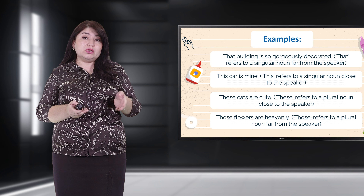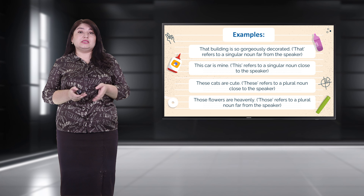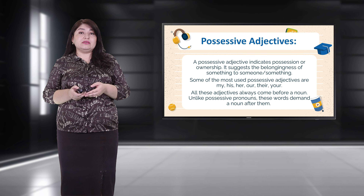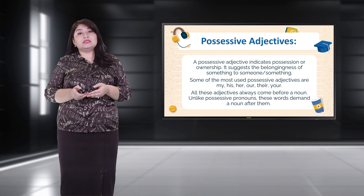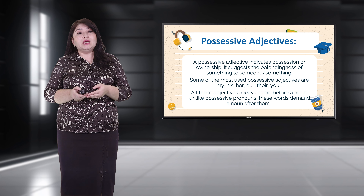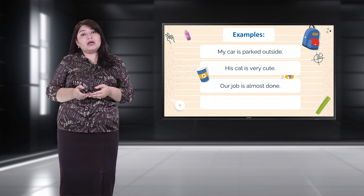Possessive adjectives indicate possession or ownership. They suggest the belongingness of something to someone. Some of the most used possessive adjectives are: my, his, her, our, their, or your. All these adjectives always come before a noun. Unlike possessive pronouns, these words demand a noun after them. For example: 'My car is parked outside,' 'His cat is very cute,' or 'Our job is almost done.'